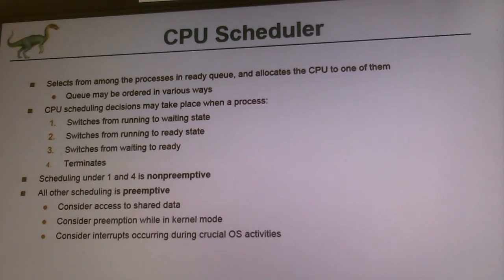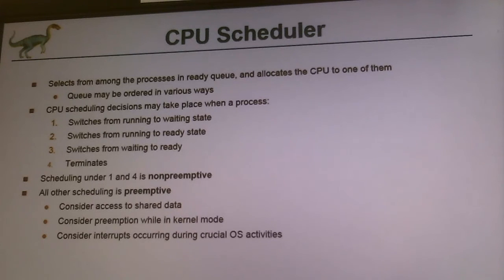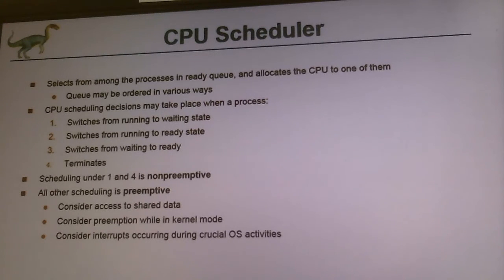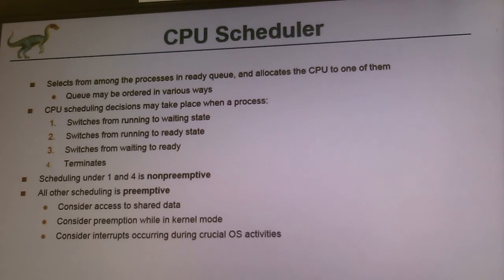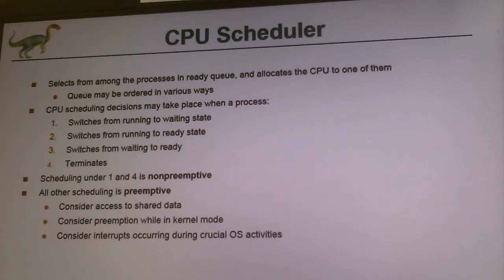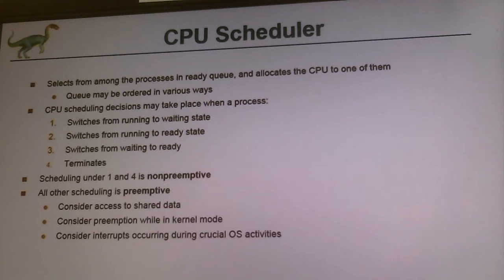Specifically, numbers one and four: if a process switches from running state to waiting state, you don't have to run your CPU scheduler for this — all you have to do is put it in the queue, no calculation behind that. And when a process terminates — number four — you don't have to do anything because it's already done; all the CPU bursts and IO bursts are finished and the process is exiting. But number two and three — if a process switches from running to ready state, or from waiting to ready state — now you have to think about it.